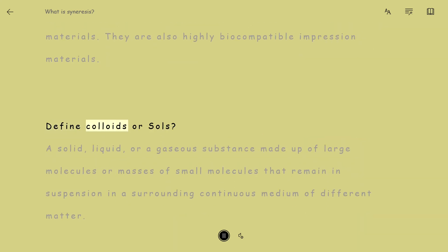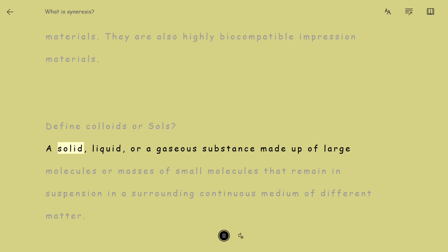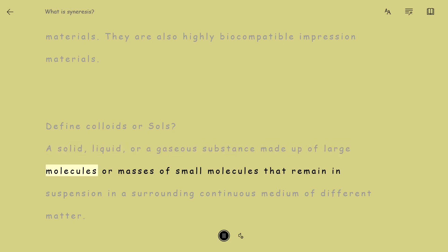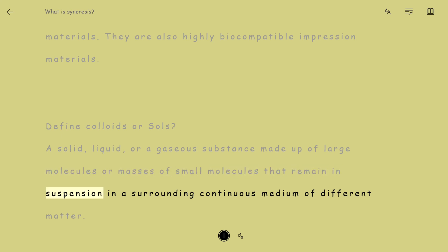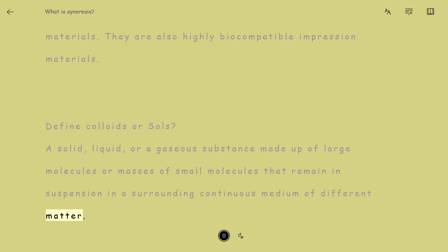Define Colloids or Soles. A solid, liquid, or gaseous substance made up of large molecules or masses of small molecules that remain in suspension in a surrounding continuous medium of different matter.